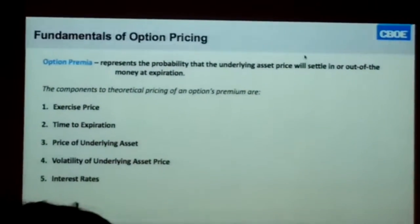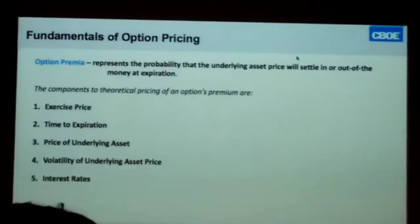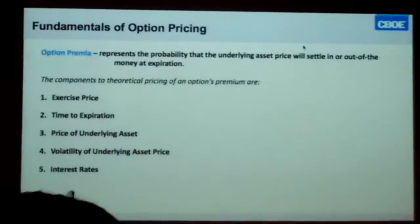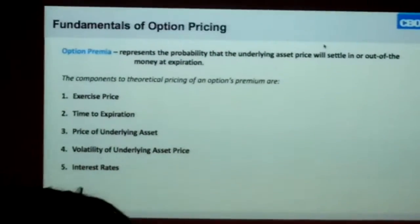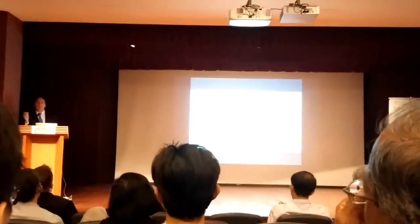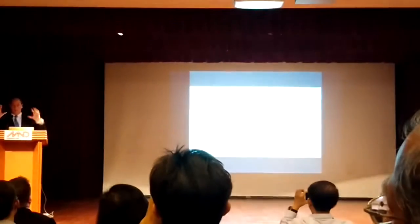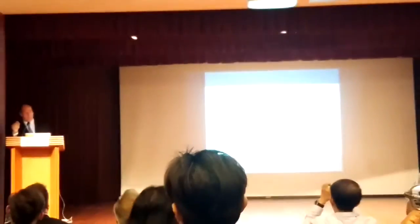To begin, we're going to talk about fundamentals of option pricing. I've got my way of describing what options are, and I'm going to share that with you — hopefully it will help you remember what premium is and what these components are. Option premium is really nothing more than thinking about probability of an outcome. That number represents the likelihood that your option is going to either settle in the money or out of the money.